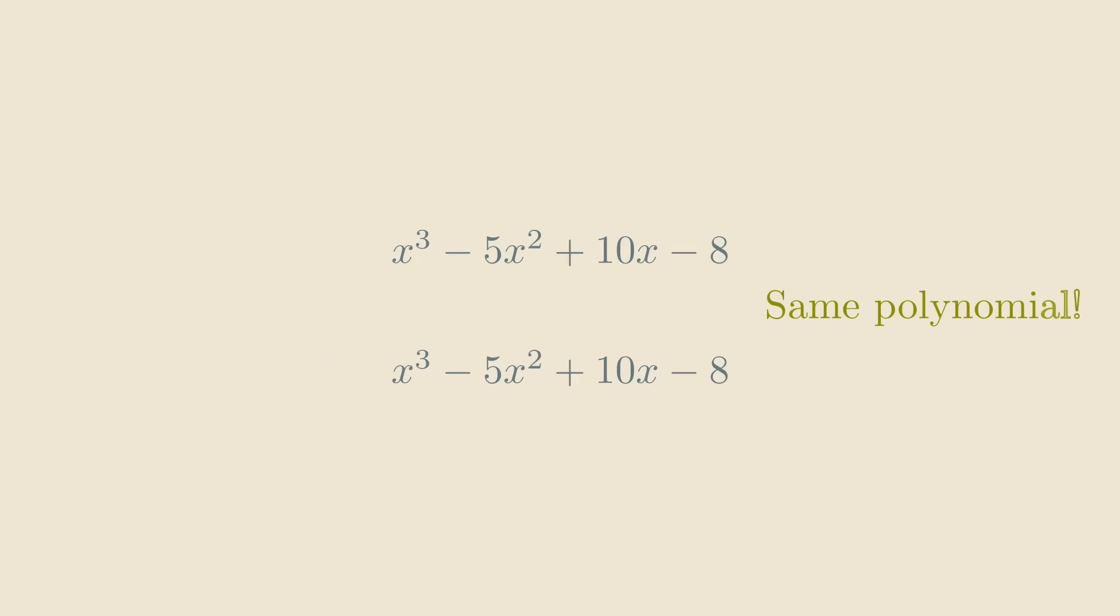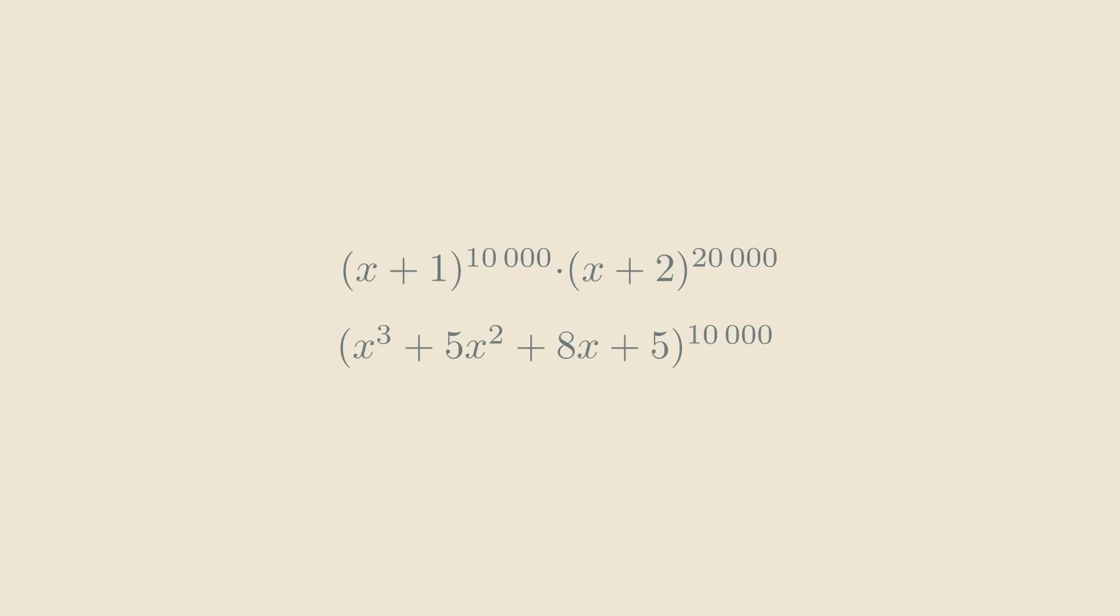But in general, the exponents in the two expressions can be really large, and multiplying them out takes time that's exponential in the length of the input. In other words, this naive algorithm does not run in polynomial time.